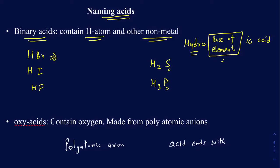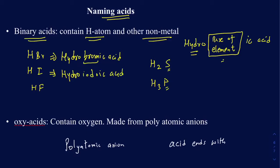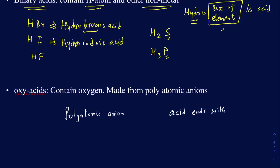For example, HBr — I'm going to start with 'hydro,' and then the base of bromine is 'brom,' and you replace the ending with 'ic acid,' so it's hydrobromic acid. What about HI? It's a binary acid, so it's going to be hydro, and the base of iodine gives us hydroiodic acid. And HF is going to be hydrofluoric acid.